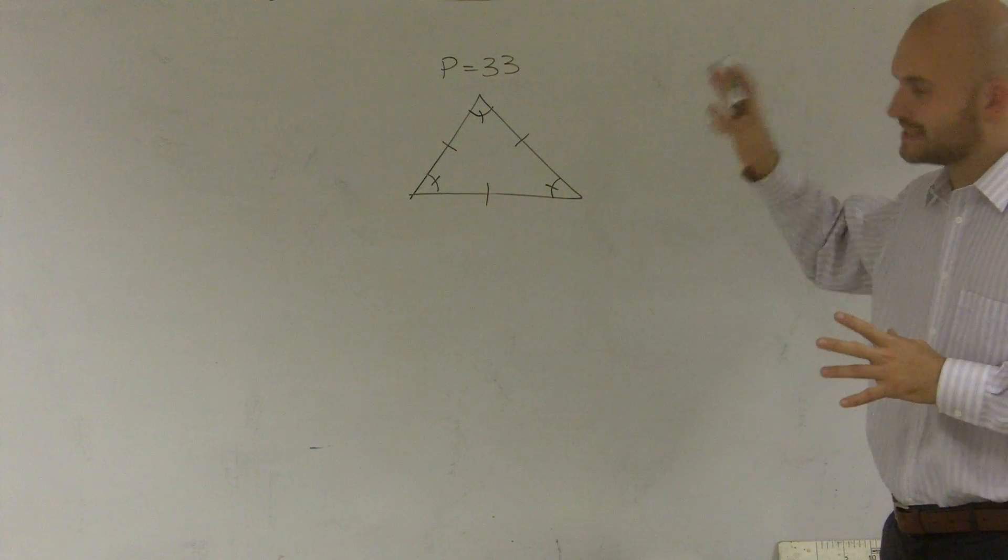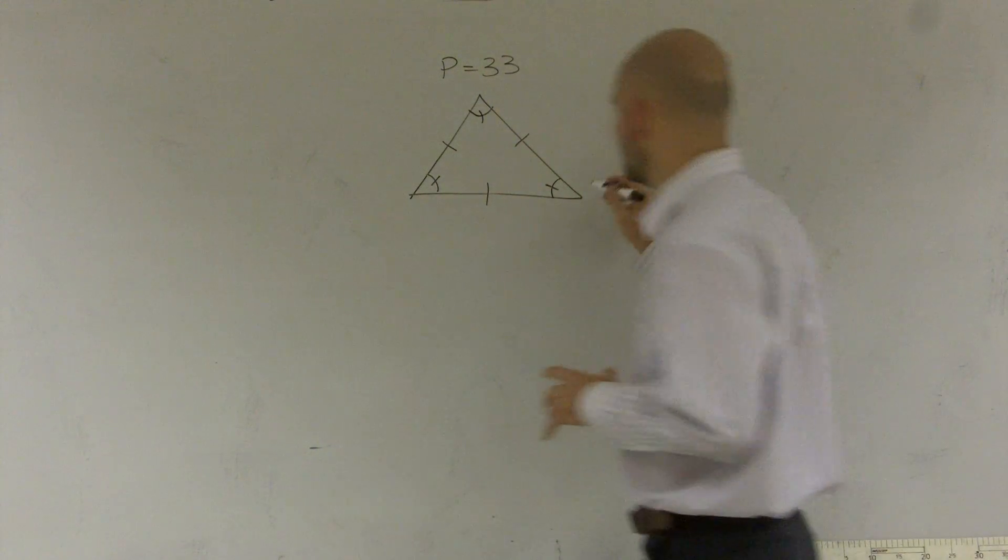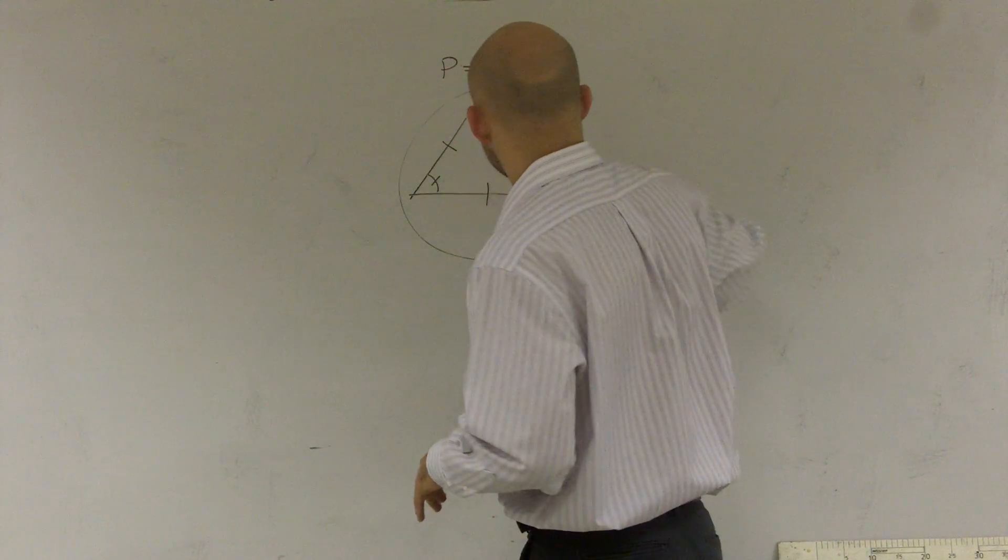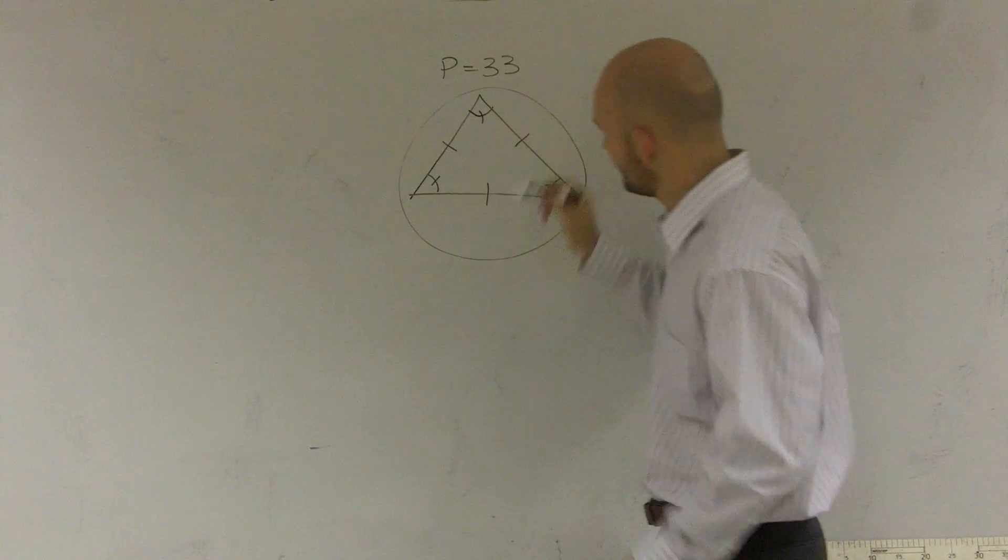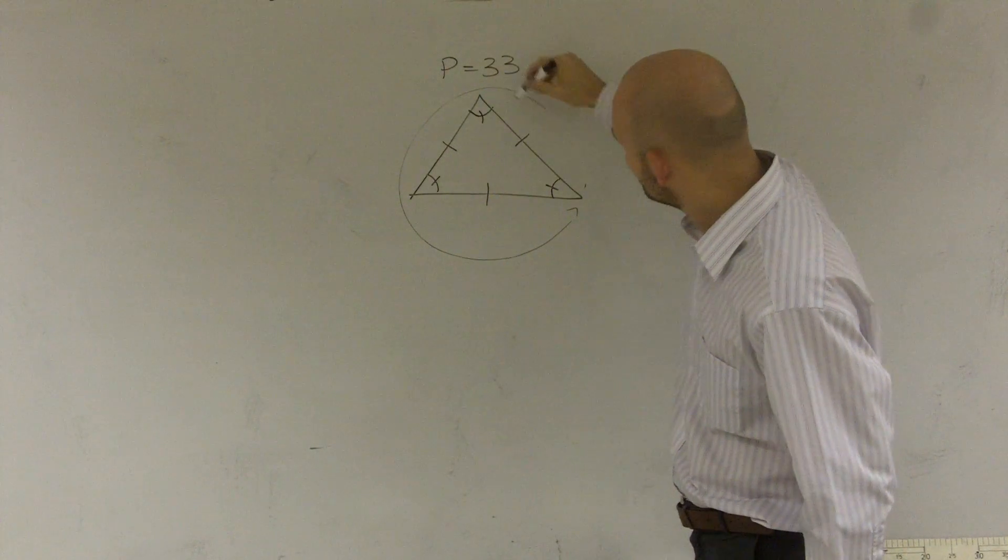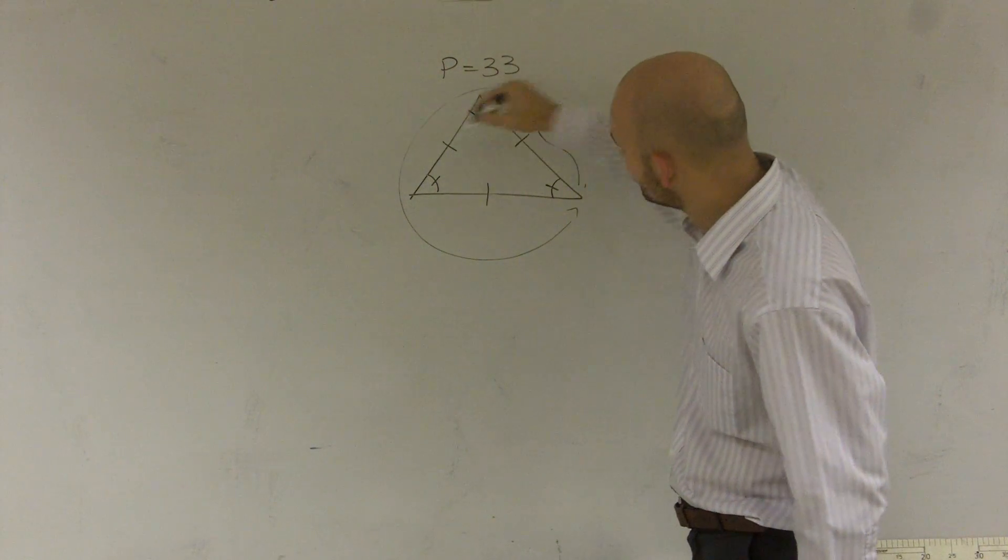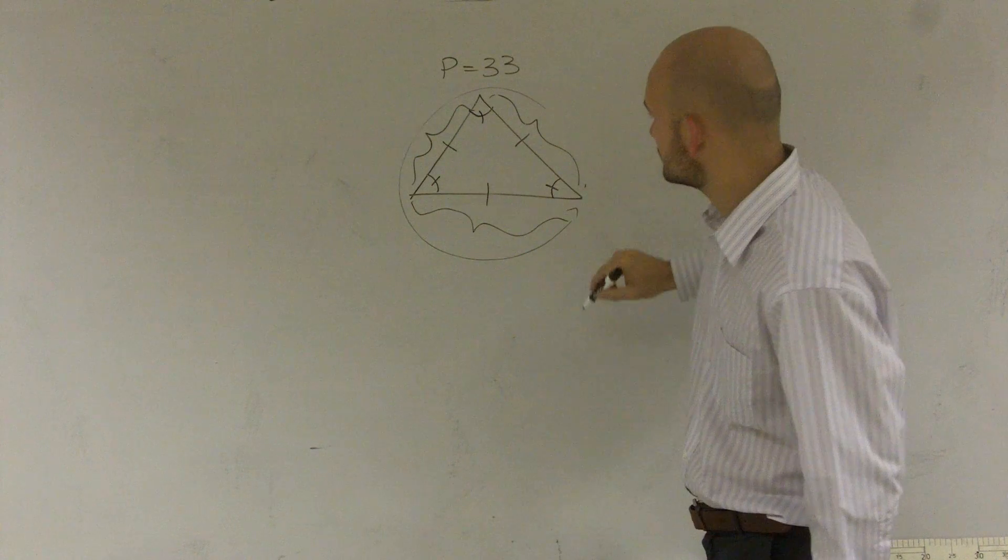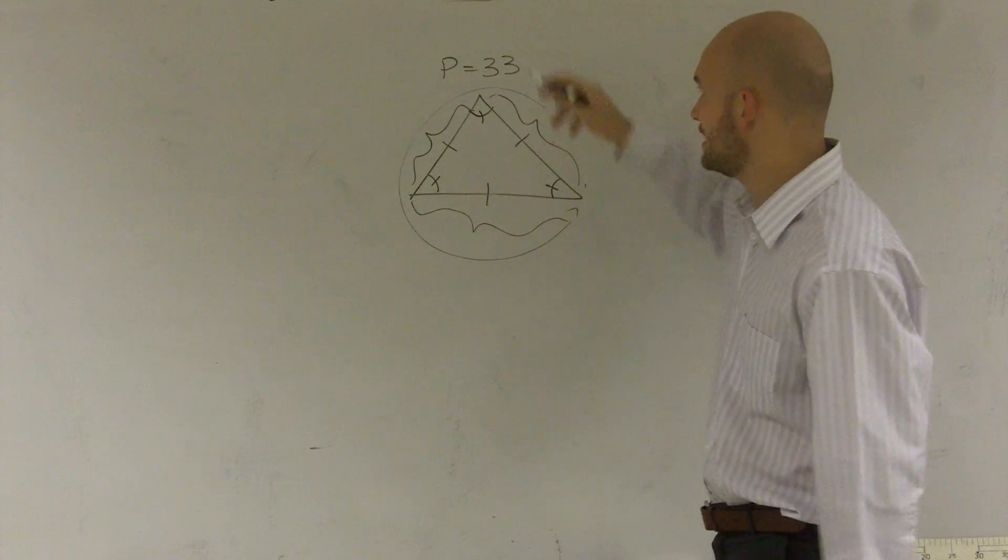On this problem, what it says is given the perimeter, and that means the distance all the way around a figure. That means this distance plus this distance plus this distance. I add those all up, equals 33.